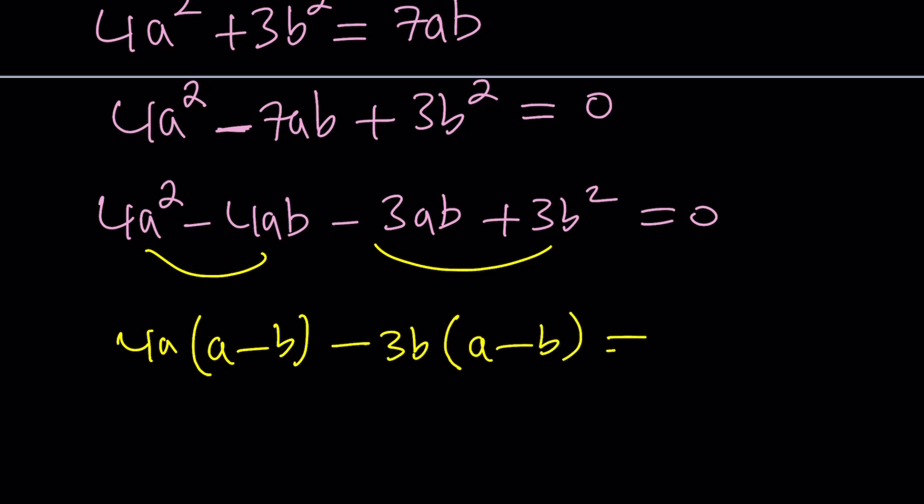That's how factoring by grouping works. And we can basically take out a minus b as a common factor. Now, so that this can be written as a minus b times 4a minus 3b equals 0. Awesome.